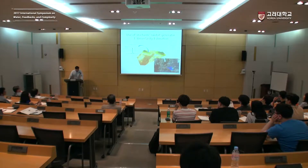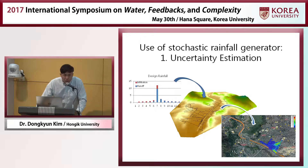A typical example is like this. In our traditional framework, we put one single design rainfall into the urban flood modeling and we get one single flood plain.